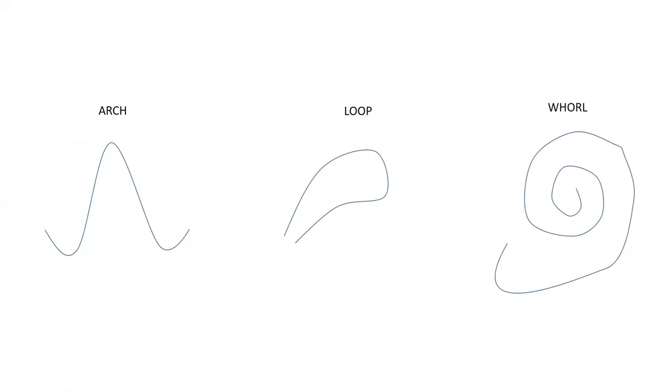Now, just in case you haven't seen the previous video, we're going to do a quick review before we look at the minutiae of our own fingerprint. The three different types of shapes you will see on your fingerprints are that of an arch, a loop, and a whirl. Now, keep those shapes in mind.